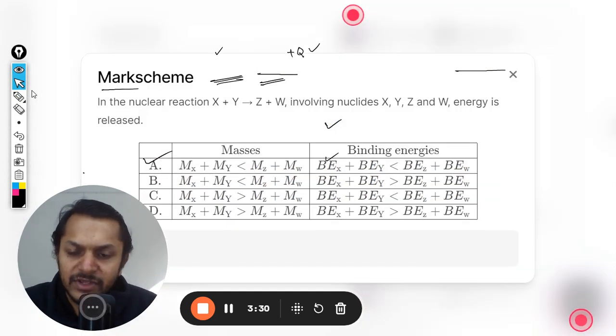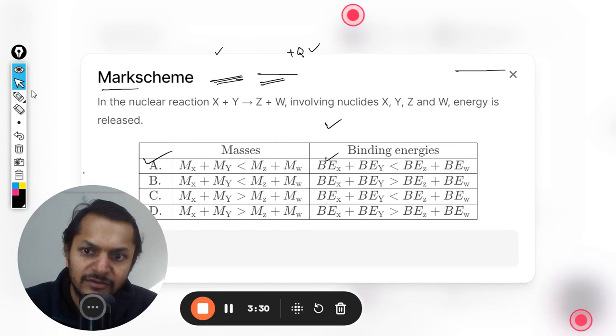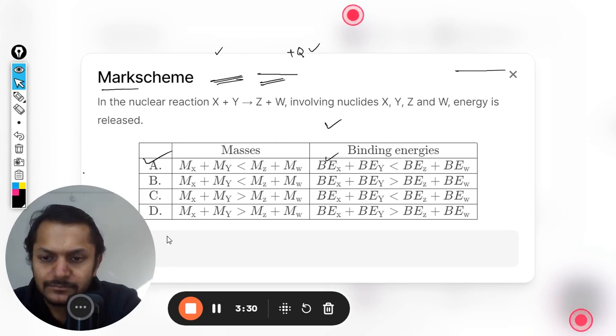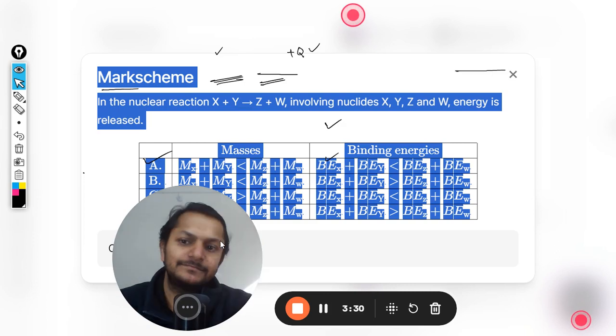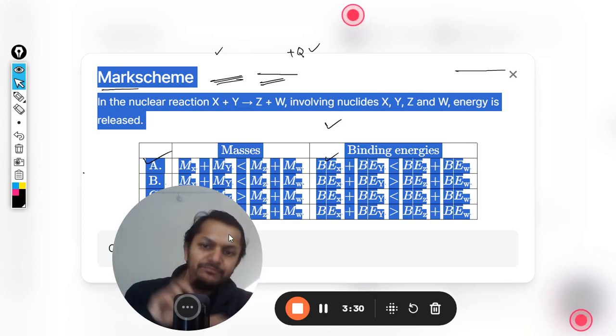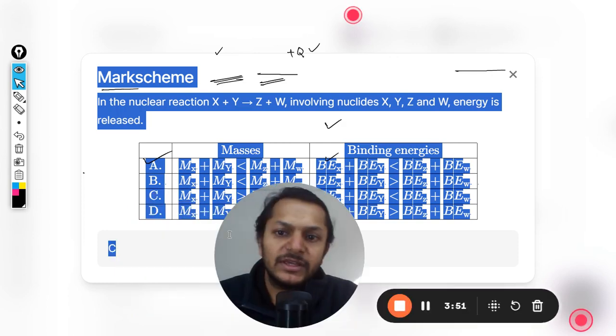So my answer is C, and let's see what is given in the mark scheme. Okay, the answer is hiding somewhere now. The answer is C, we can see it, isn't it? Yes, so yes, absolutely, so we are absolutely correct.